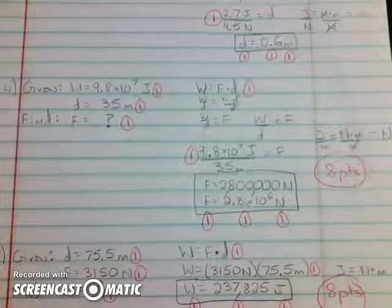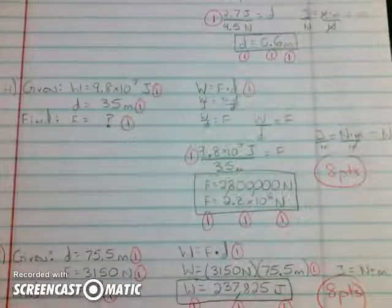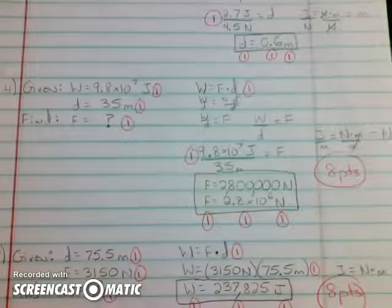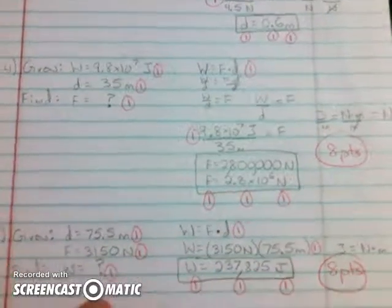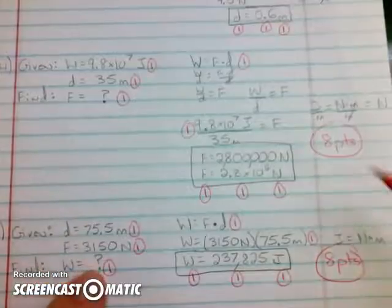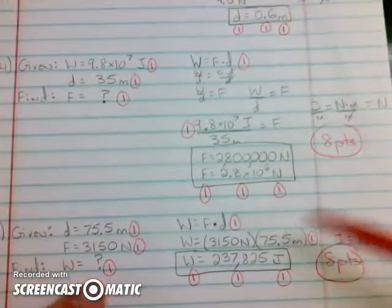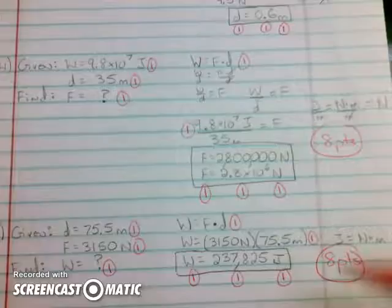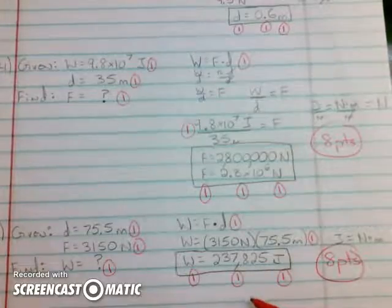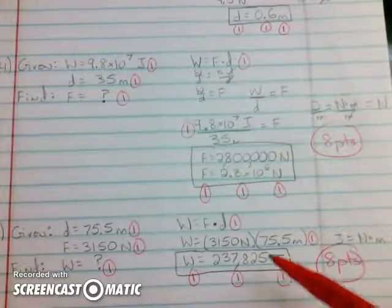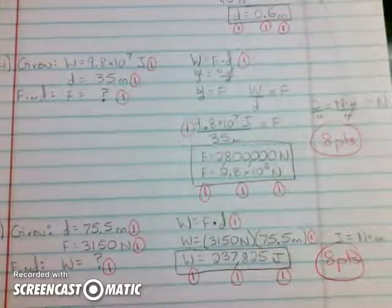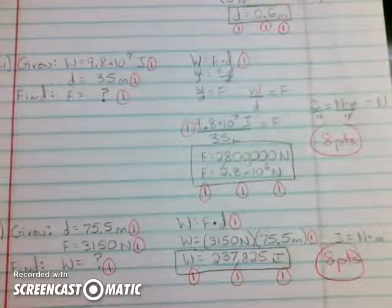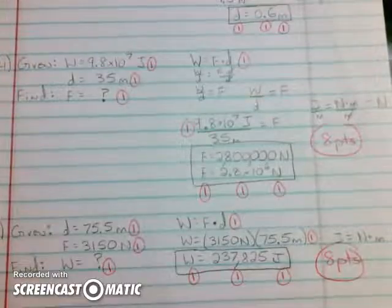Each of the problems you're doing are going to be worth eight points. There's like 15 of them, so eight times 15 means the total assignment will be worth 120 points. Remember you can get seven out of eight just by going through and writing down the stuff that you're given, the equation you're going to use, and then plugging those values in the equation. If you get the wrong answer on your calculator, it's only one point out of eight. That's it. I'm gonna do another recording here in a second to show you how to use your calculator in scientific notation.